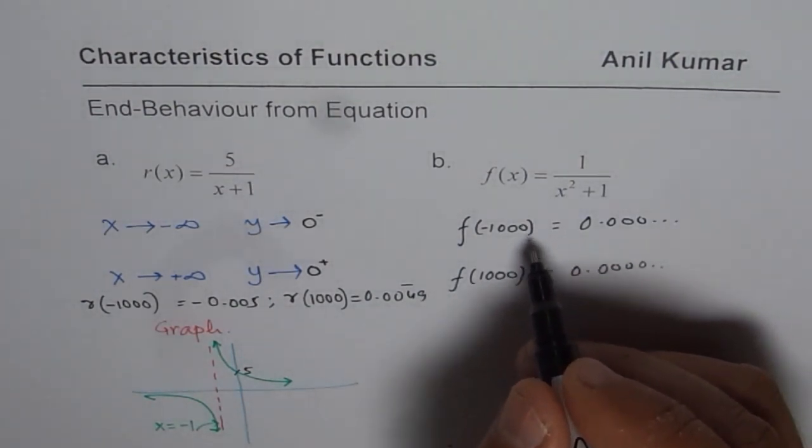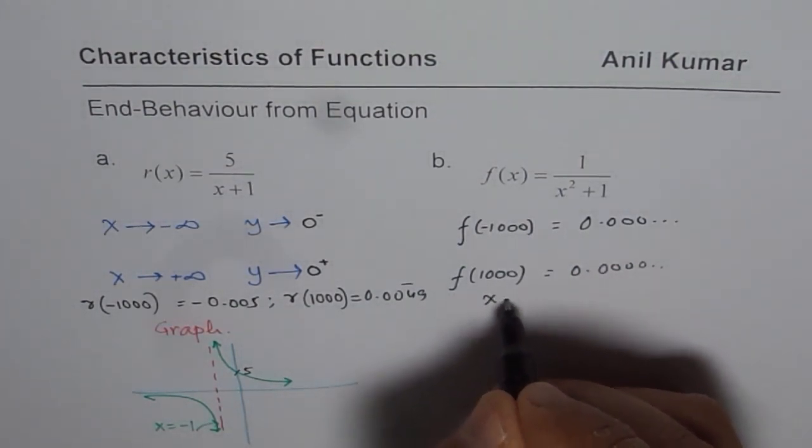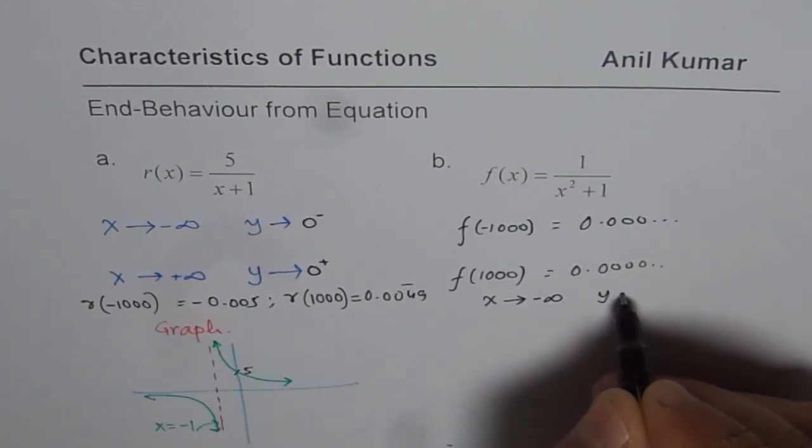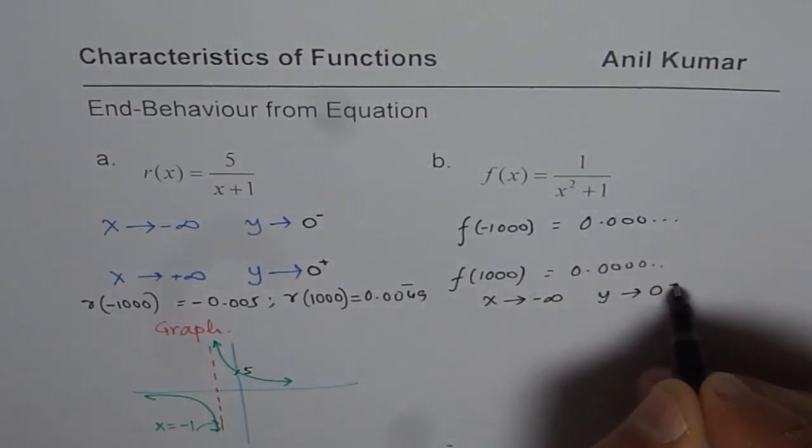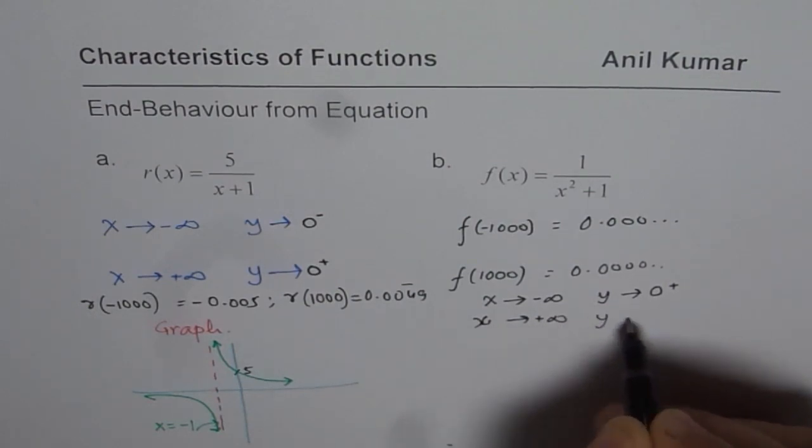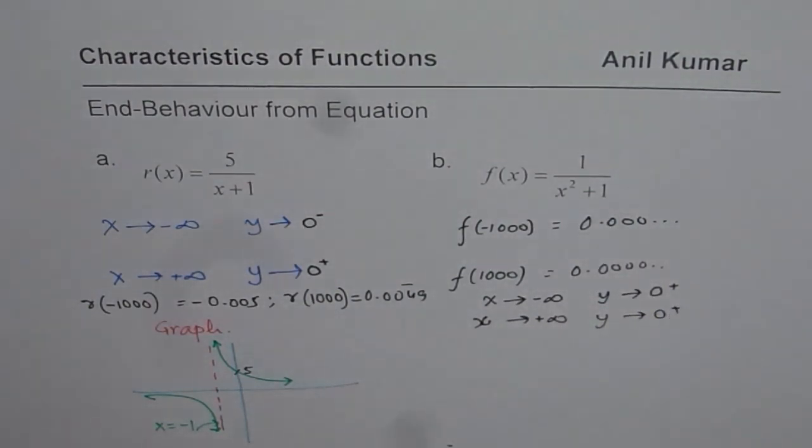So we could say that the end behavior here is that when x approaches negative infinity, y approaches 0, but from the positive side, and when x approaches positive infinity, y approaches 0 from the positive side.